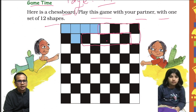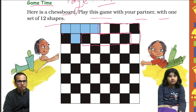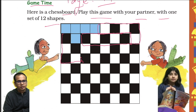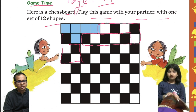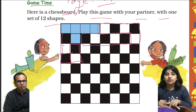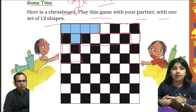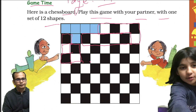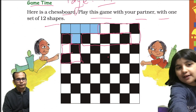Now we will use this shape. I will use this one. Let me count: 1, 2, 3, 4, 5 — it covers five squares. Now your turn: 1, 2, 3, 4 — and this one makes five.